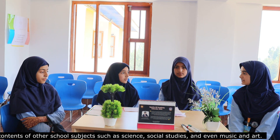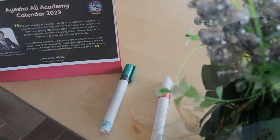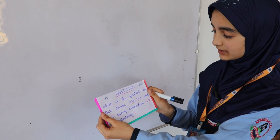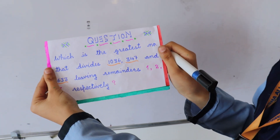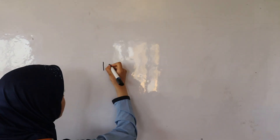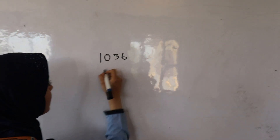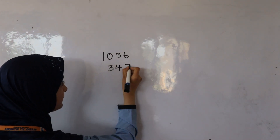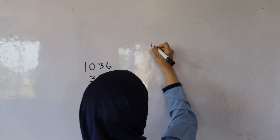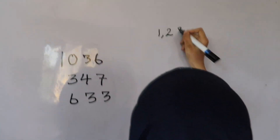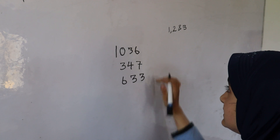Can I ask you a question about HCF? Which is the greatest number that divides 1036, 347, and 633 leaving remainders 1, 2, and 3 respectively? The numbers are 1036, 347, and 633, and as stated, the remainders are 1, 2, and 3. So we will subtract these remainders from the three numbers.